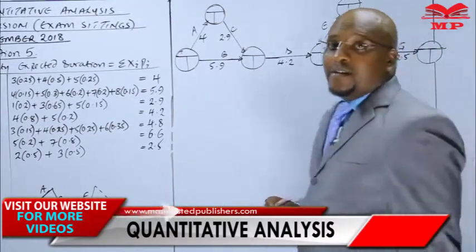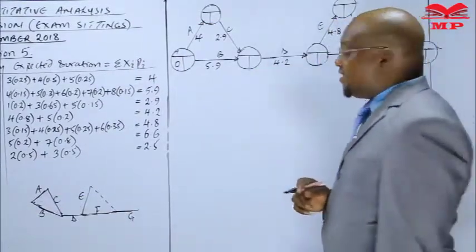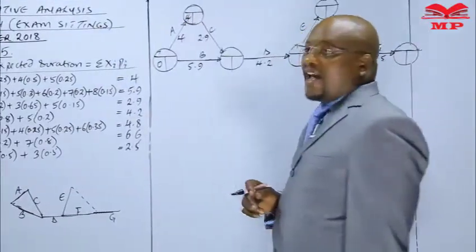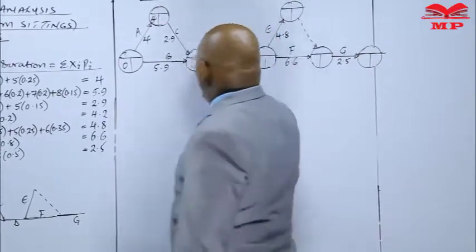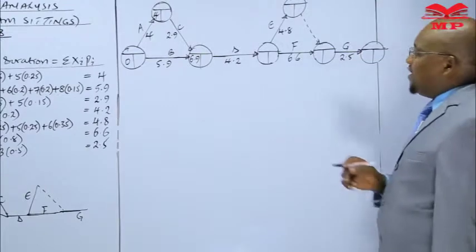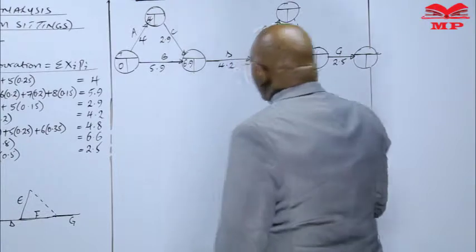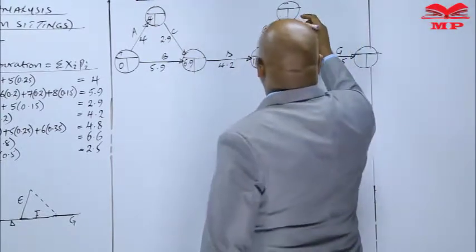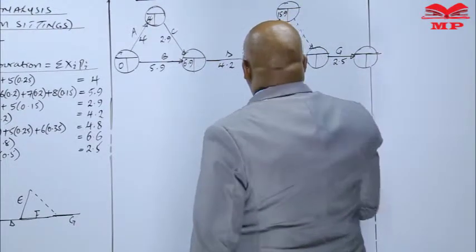So to get the earliest start time and earliest finish time, which is the earliest event time, it is 0. We add 4, this is 4. When you add 2.9, we get 6.9, while this one is 5.9. So we just take the 6.9 as our longest. Then we add this, this is going to give us 11.1. When you add 11.1, then up here it's going to give us 15.9.